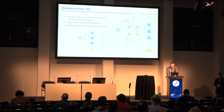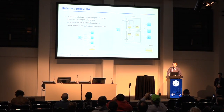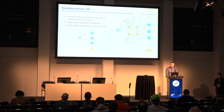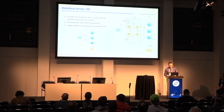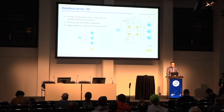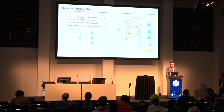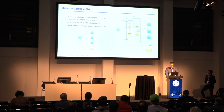Luckily there's a quite easy solution. Making it highly available can be done by setting up an active-passive setup and synchronizing both instances with KeepAliveD. In case of failure on one proxy, the second takes over the virtual IP. For the client, everything looks almost fine — transactions could be lost, but this is datastore-dependent.